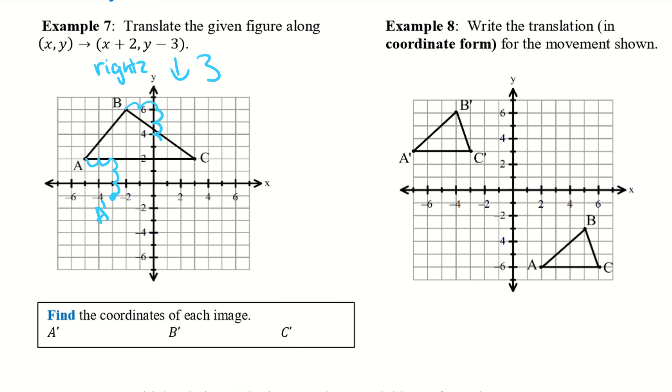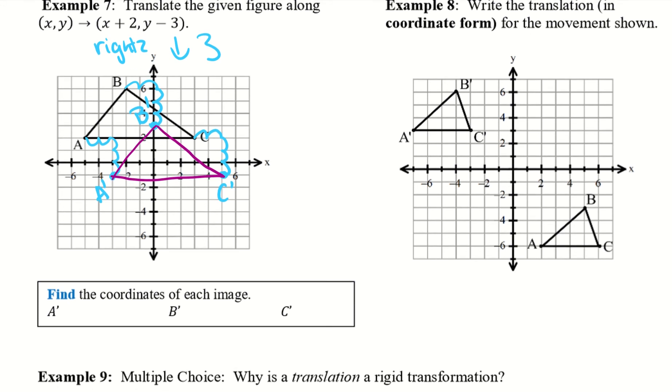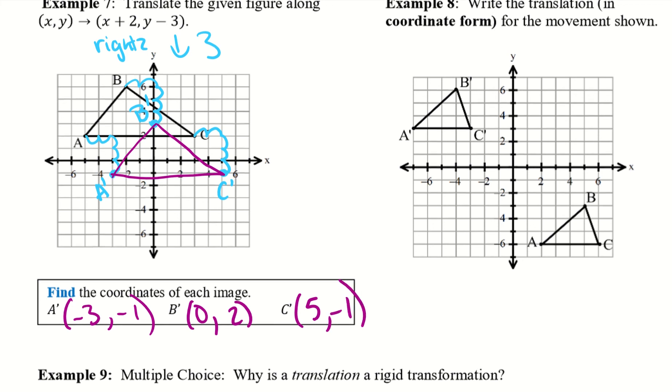Right 2, down 3. Alright, there's my new B prime. And then same thing with C. Right 2, down 3. And there is C prime. I'm going to go ahead and connect the dots. And now I have my translated triangle. So let's go ahead and find the coordinates of each of these. So my A prime is at negative 3, negative 1. B prime is, it doesn't go left or right at all, so 0 and then up 2, so 2 for my Y. And then C, I have 5, negative 1.